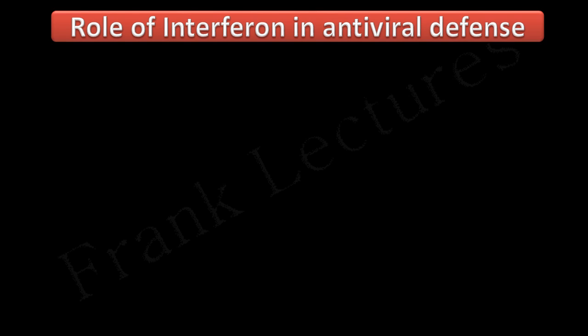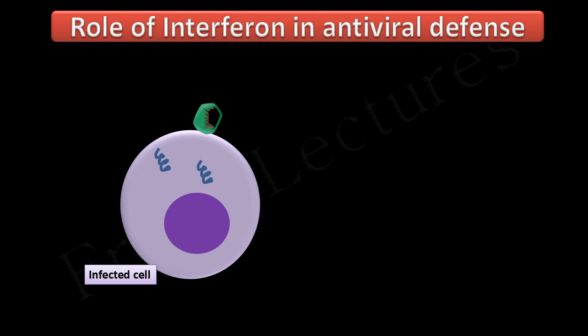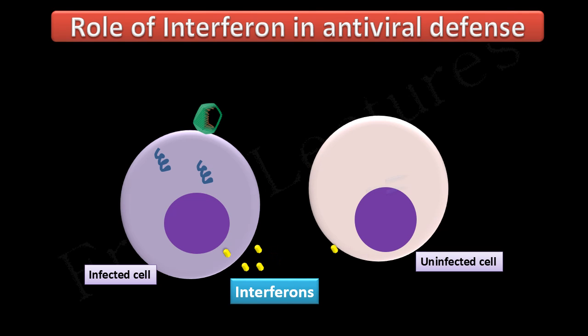When a virus infects a cell, it induces the infected cell to produce interferons. These interferons are released and bind to nearby uninfected cells, which then produce antiviral proteins. When the virus attempts to infect these now-protected cells, the antiviral proteins degrade viral nucleic acid and inhibit protein synthesis. In this way, interferons prevent the spread of viral infections.